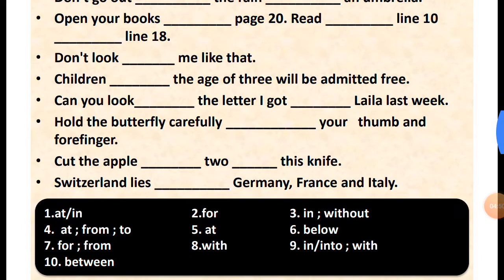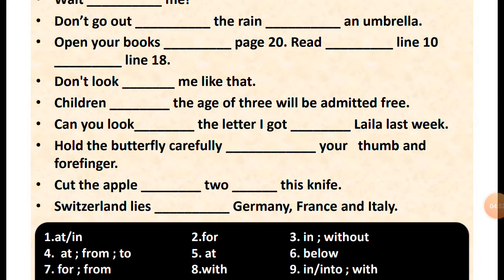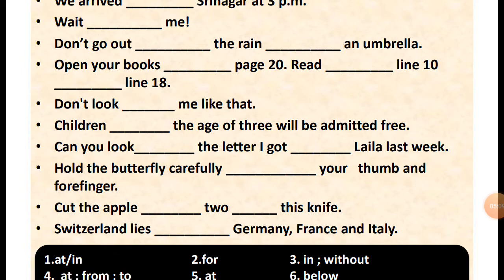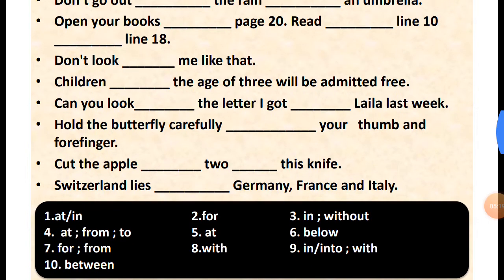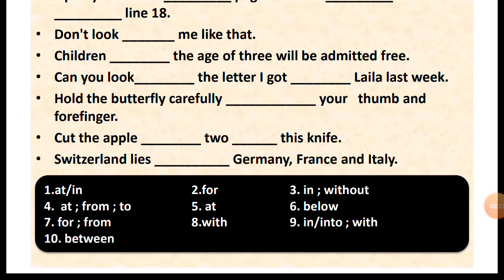Switzerland lies between Germany, France and Italy. Also, 'hold the butterfly carefully with your thumb and forefinger' is correct too. The answers are given on screen for all 10 sentences, displayed with a black background.